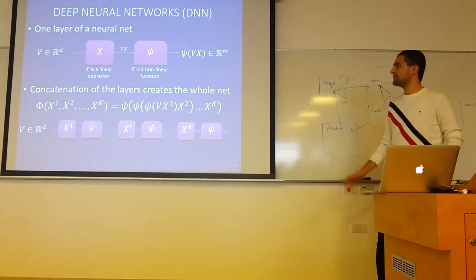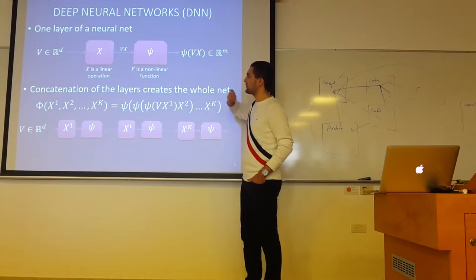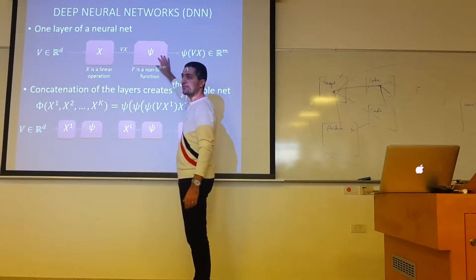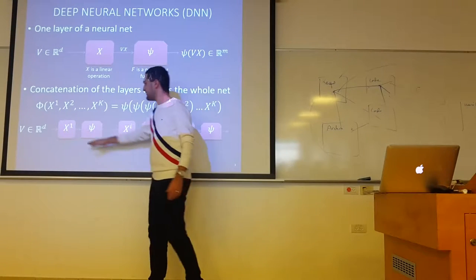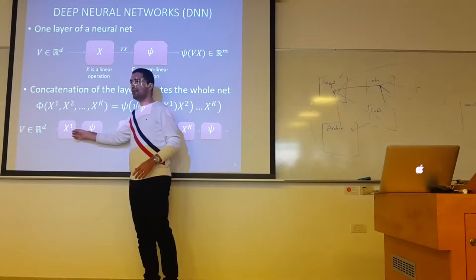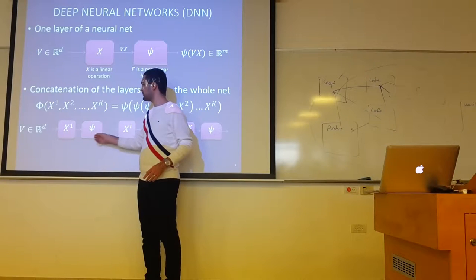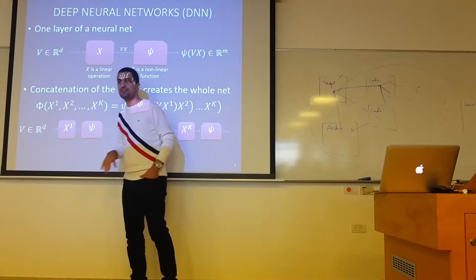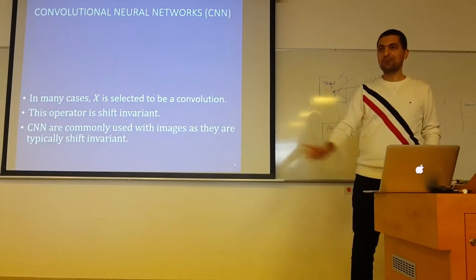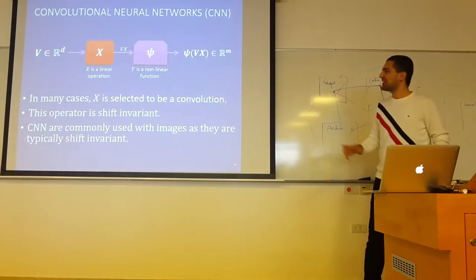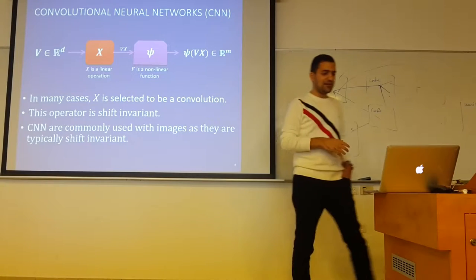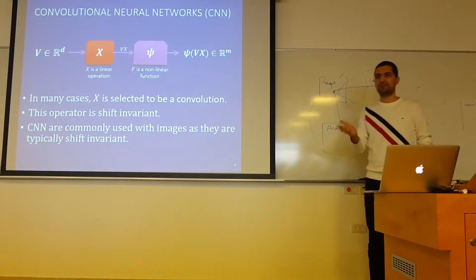In its simplest form, deep learning is a concatenation of simple layers, where each layer is a linear operation followed by a non-linear function. When you concatenate this simple structure, you get a deep neural network. The magic is how to choose the weights in the linear part and what simple function to choose in the non-linear part. Once you know how to set the weights and the non-linear function, you can solve any problem in the world. For images, people use convolutions instead of a simple linear part, because images are shift-variant, and convolutions with the winning layer give some kind of invariance.